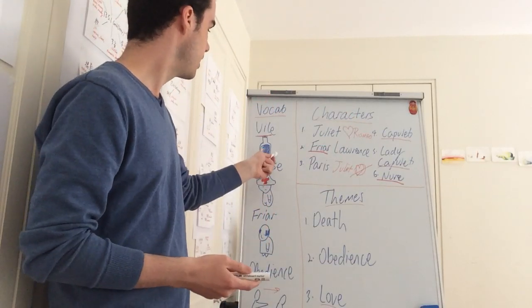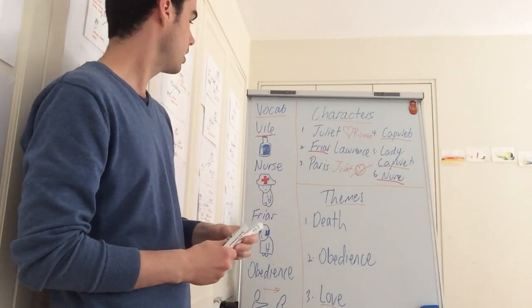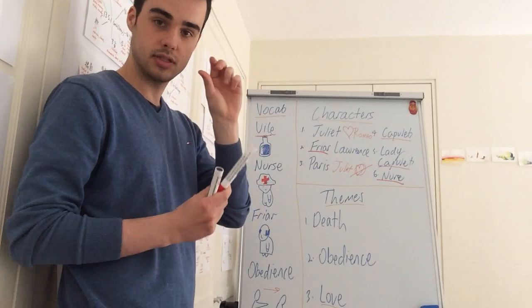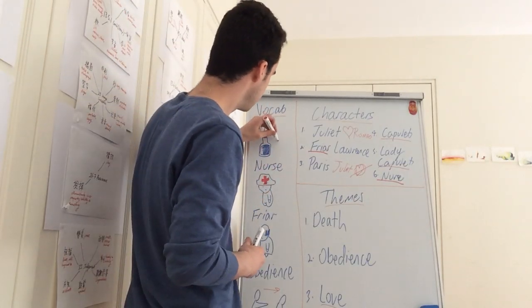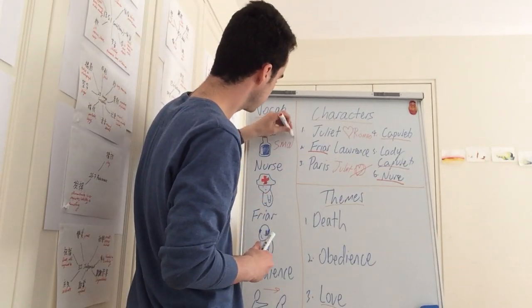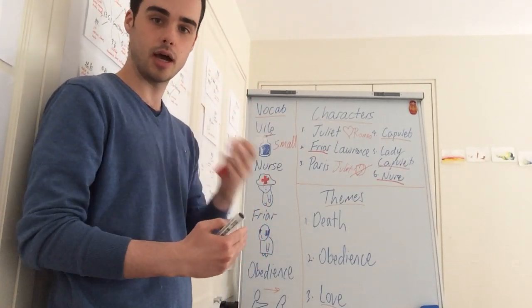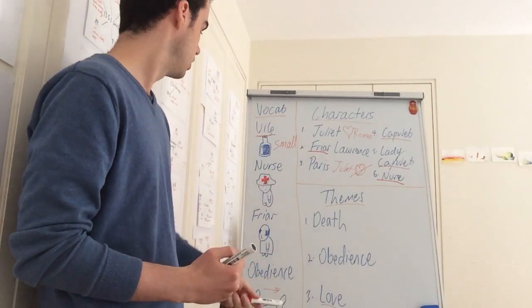It is a kind of medicine. And one important thing about this is that vials are bottles that are very small. So that's a key thing to know. Small so it is easy for Juliet to hide it. Very good.